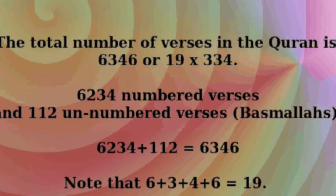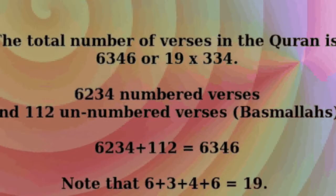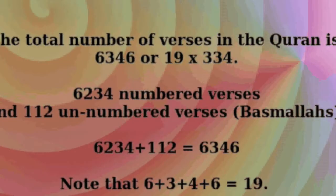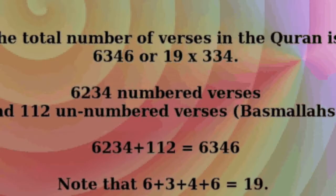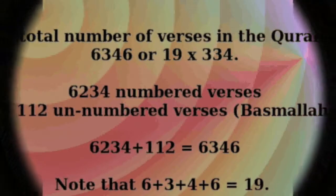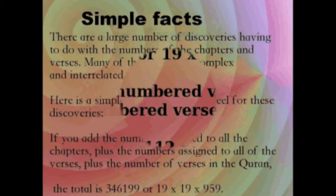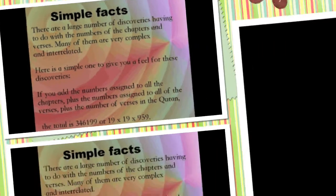The total number of verses is 6346, or 19 times 334. That number consists of 6234 numbered verses, and 112 unnumbered verses. Note that 6 plus 3 plus 4 plus 6 equals 19. There are many other discoveries, which are purely mathematical, non-related to the letters, or words.